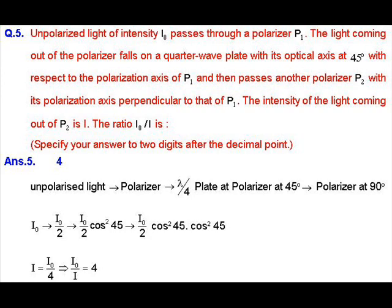In this question, an unpolarized light of intensity I_0 passes through a polarizer P_1. The light coming out of polarizer falls on a quarter wave plate with its optical axis at 45 degrees with respect to the polarization axis of P_1, then passes through another polarizer P_2 with its polarization axis perpendicular to that of P_1. The intensity of the light coming out of P_2 is I, and we have been asked to calculate the ratio of I_0 and I.